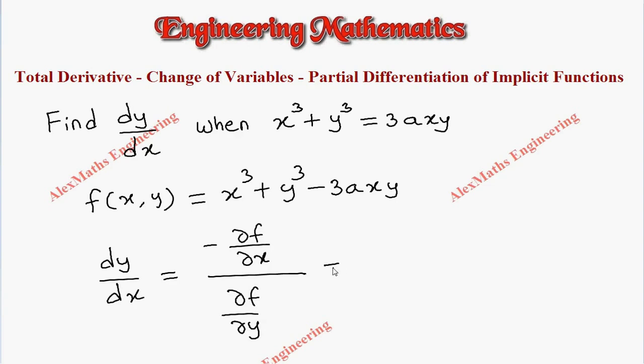In the numerator, it is a partial derivative with respect to x. So x cube derivative is 3x square, y cube is purely constant, it is 0. And the third term minus 3a y is constant and the differentiation of x is 1.